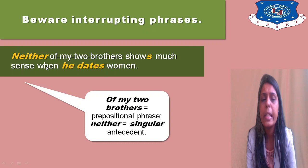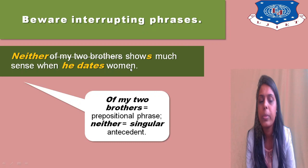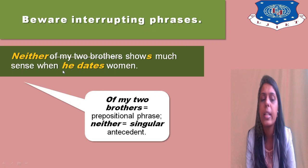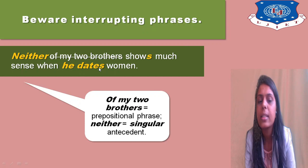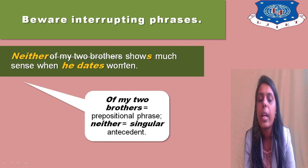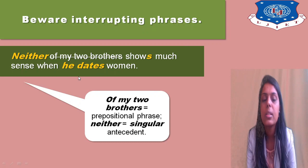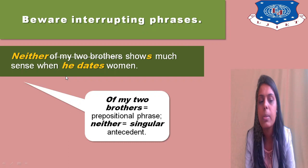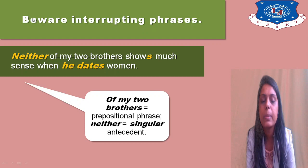Be aware when interpreting phrases like 'neither of my two brothers' — this is always singular. For example: 'Neither of my two brothers shows much sense when he dates women.' 'Neither of my two brothers' is a prepositional phrase, and 'neither' equals a singular antecedent. That is why we use the singular antecedent 'he dates,' not 'them dates' or 'they date.' This prepositional phrase is treated as a singular thing.